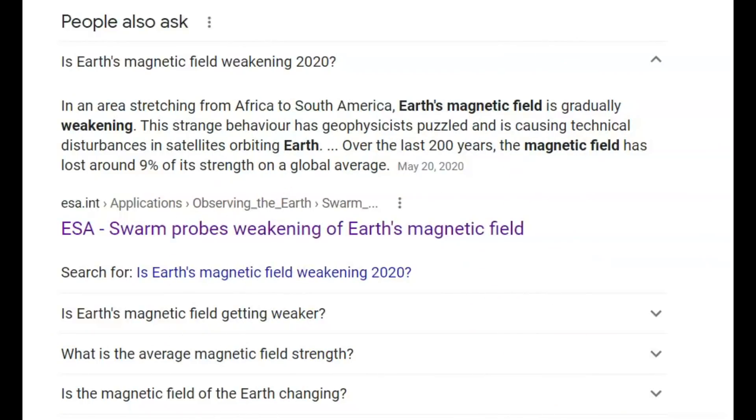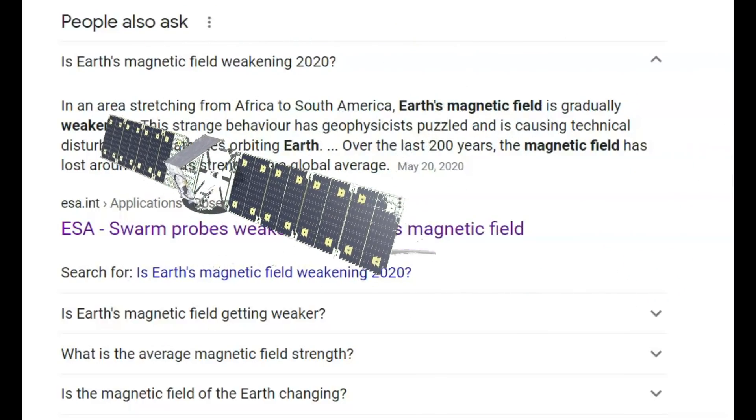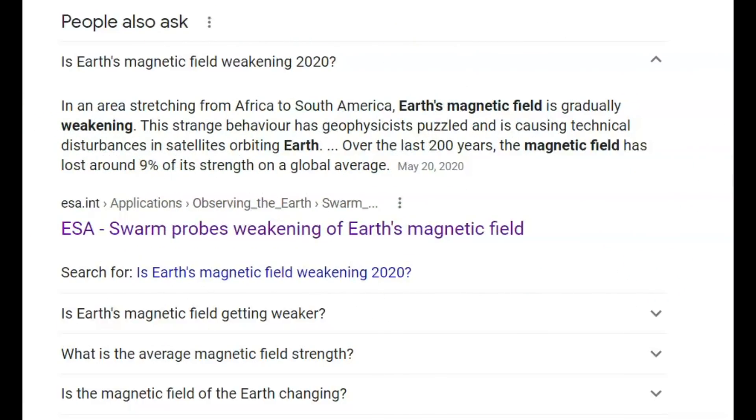There is an area stretching from Africa to South America where the Earth's magnetic field is gradually weakening. It is causing technical disturbances in satellites orbiting the Earth. In the last 200 years the magnetic field has lost around 9% of its strength on a global average.